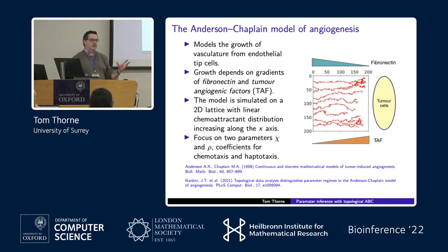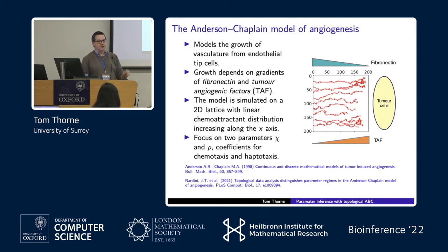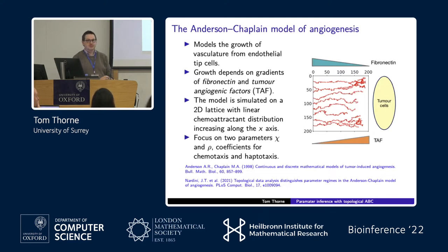The blood vessels tend to migrate up the gradient of TAF by chemotaxis and up the gradient of fibronectin by haptotaxis. The model is simulated on a 2D lattice — a 2D grid — modelling the way blood vessels grow as they move across, doing things like dividing, branching off, and perhaps joining together again. In the model we focused on two particular parameters, chi and rho, which are the coefficients for chemotaxis and haptotaxis.